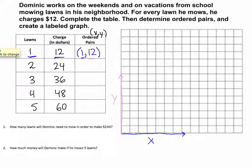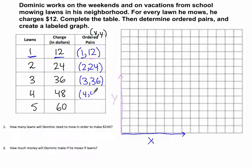The next ordered pair is going to be 2 comma 24, 3 comma 36, 4 comma 48, and 5 comma 60. This is the information we're going to be using to create our graph.